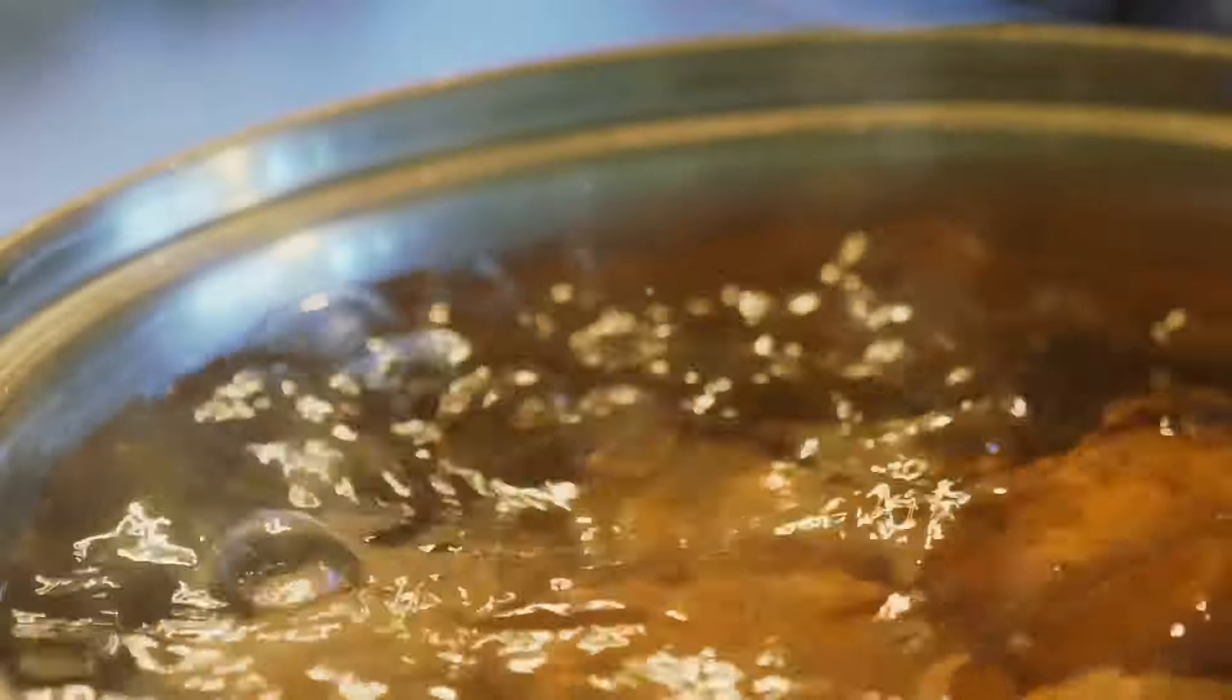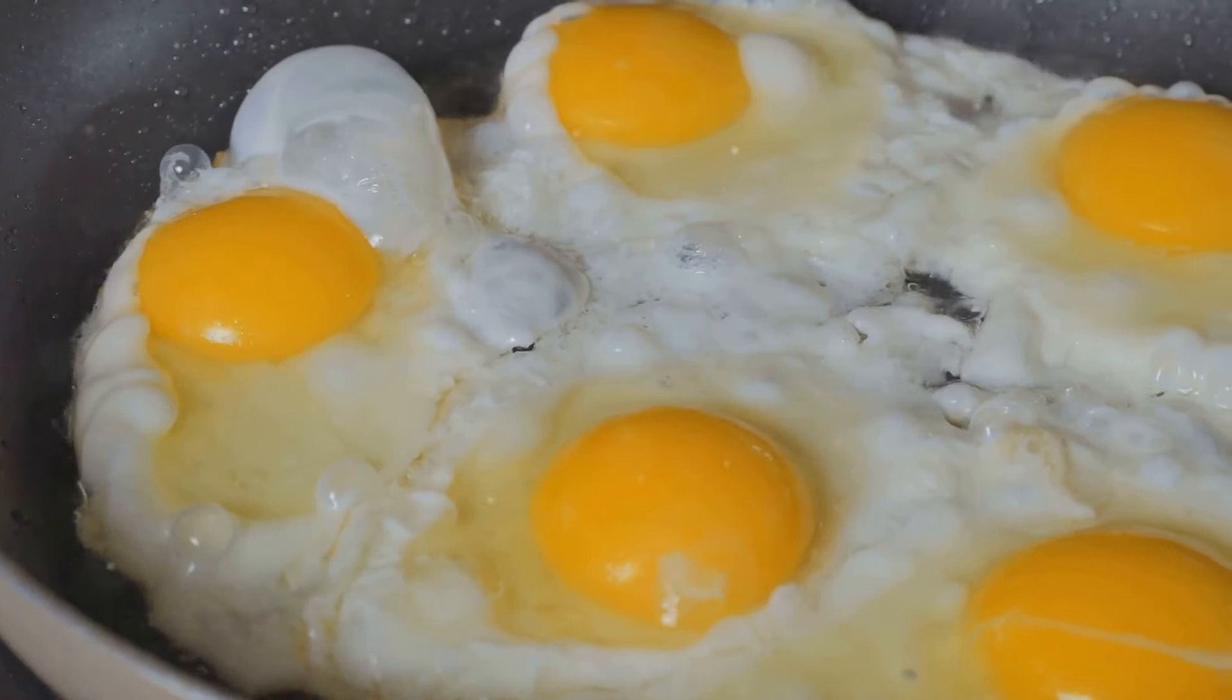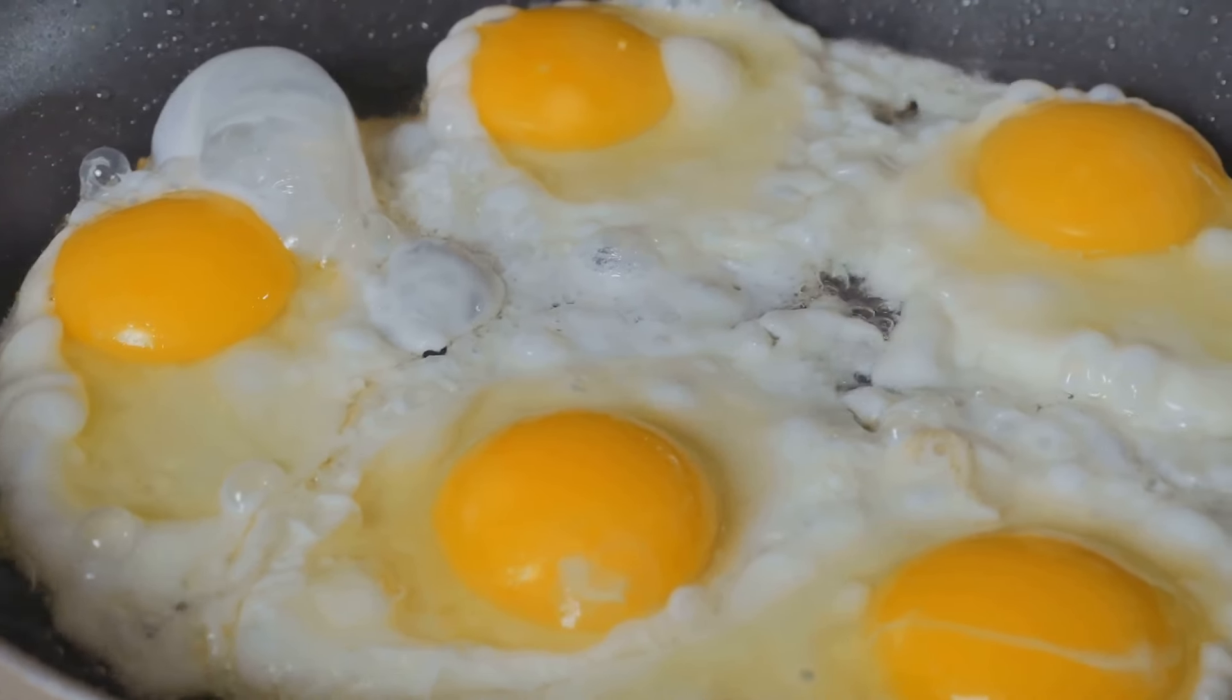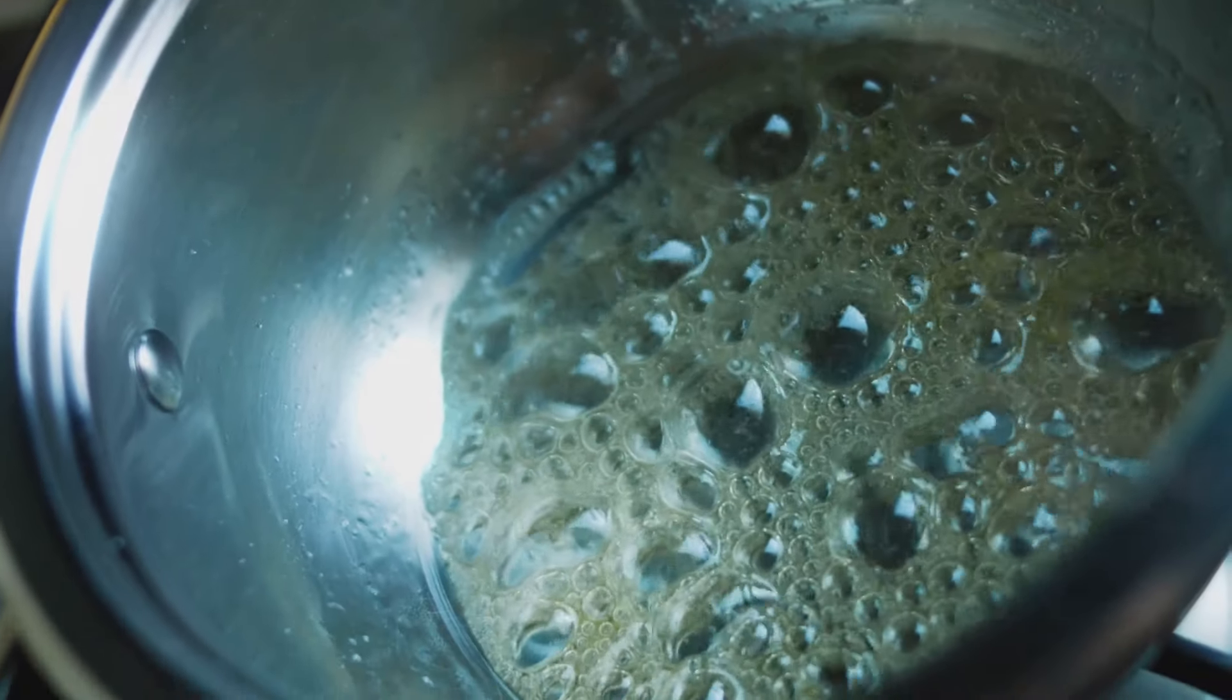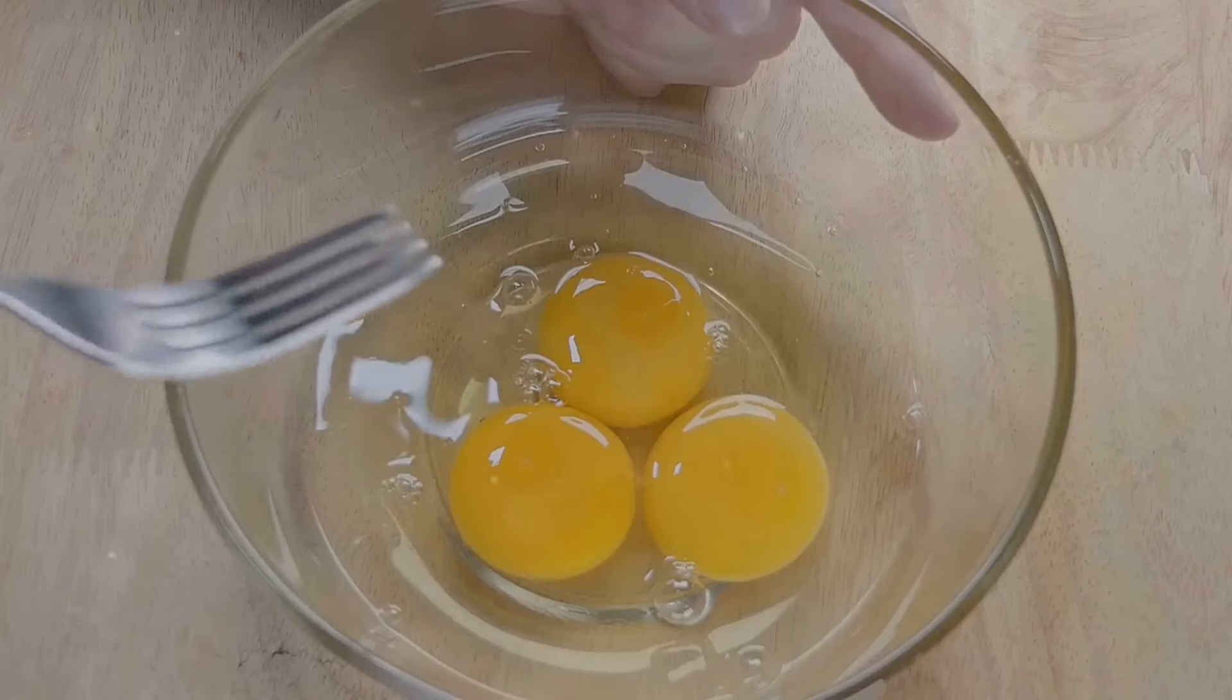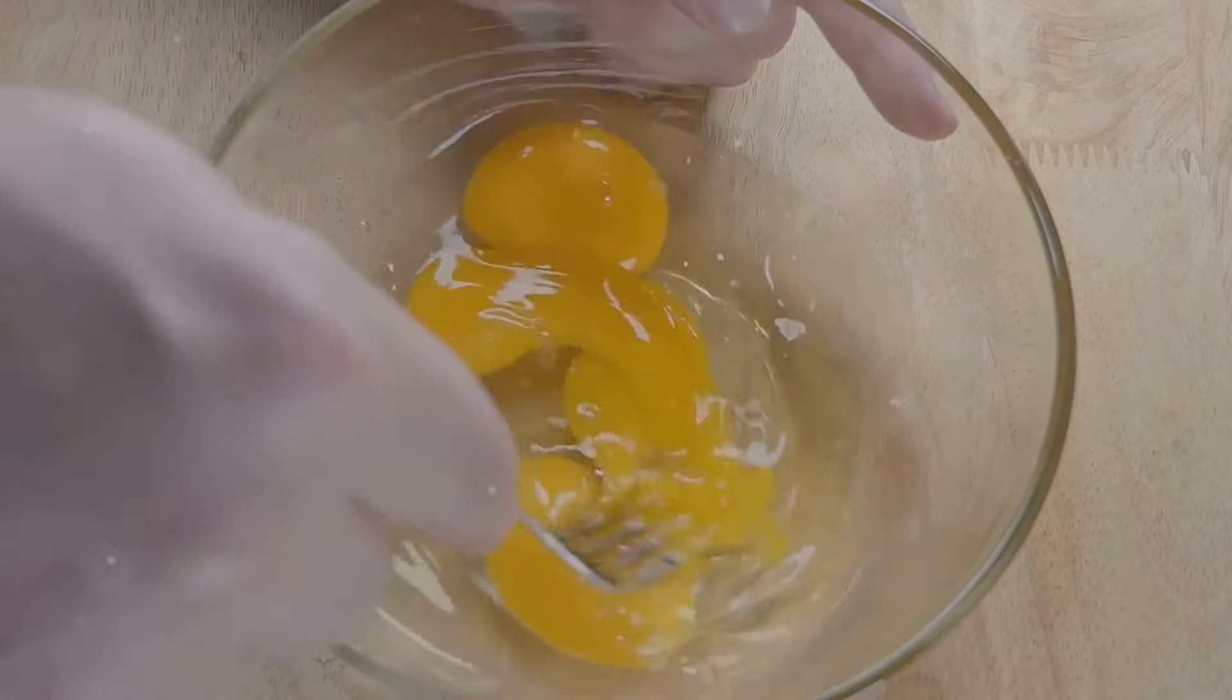Now let's talk about some common mistakes to avoid when boiling eggs. First, overcooking. This not only leads to a green ring around the yolk but also produces a sulfuric smell. Starting with hot water is another mistake. It can result in uneven cooking. And finally, not cooling the eggs quickly enough. Skipping the ice bath can make peeling the eggs difficult and might even overcook them further.